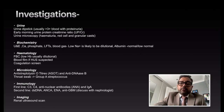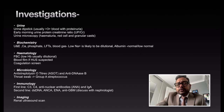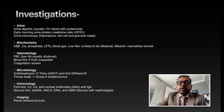Perform antistreptolysin O (ASO) titer, anti-DNase B level, and consider a throat swab to rule out group A streptococcal infection. First-line immunology tests are C3, C4 levels, antinuclear antibody (ANA), and IgA level. Second-line immunology tests include anti-dsDNA level, ANCA, ENA, and anti-GBM antibody level — after discussion with the nephrologist.